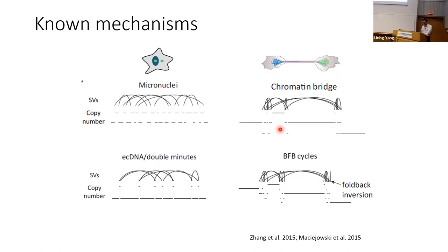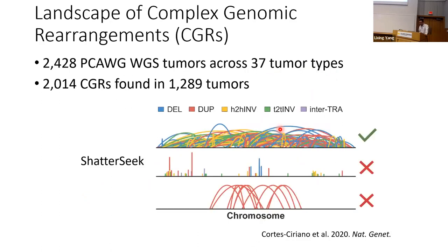Now that we know there are multiple mechanisms with different patterns, we want to study which mechanisms actually contribute more to the complex rearrangements seen in cancer. To do that, we first have to detect complex rearrangements from tumor whole-genome sequencing data. We use an algorithm called ShatterSeek, developed by our colleague Isidio Cortez-Ciriano.